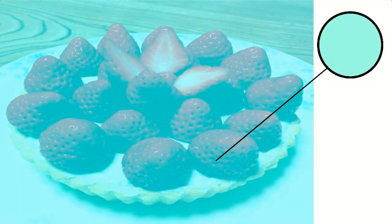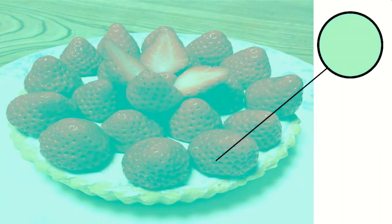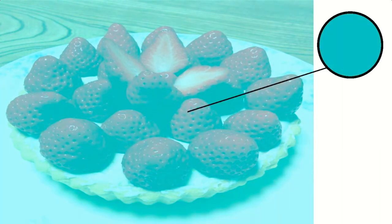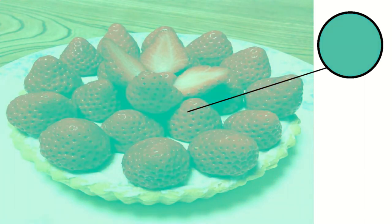Similar to a camera, when your retina is exposed to light, it encodes the intensity of each primary color. However, it also encodes the relative differences between colors. In this animation, we changed the ratio of yellow to blue while keeping the brightness and the ratio of red to green constant. Because your retina is taking into account the differences between colors, the strawberries look red throughout the animation, even though none of the pixels are actually red.